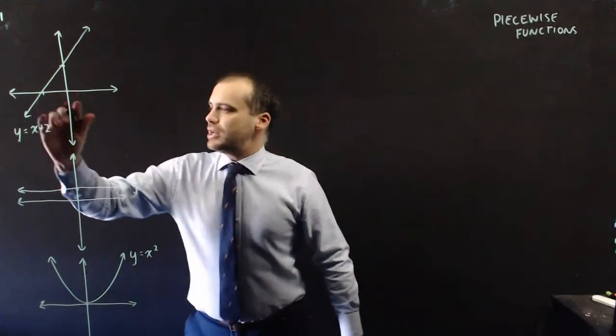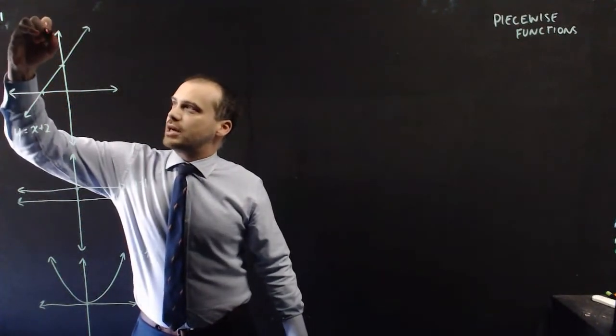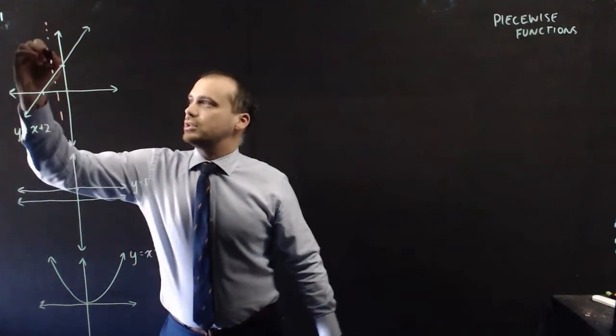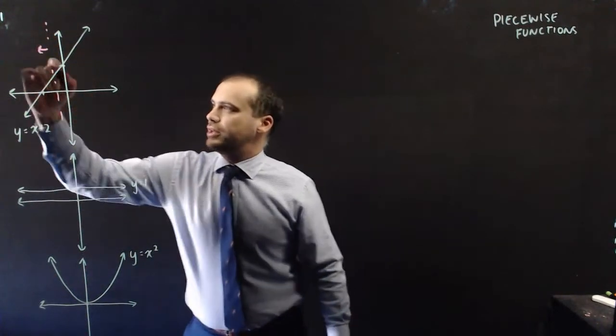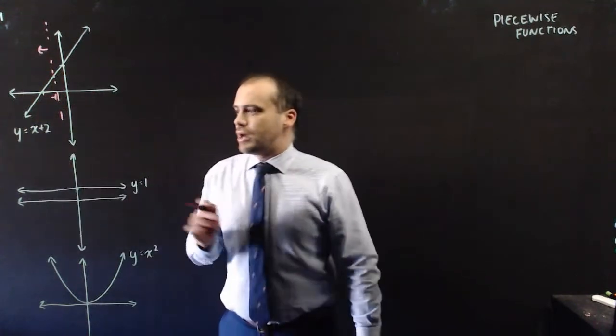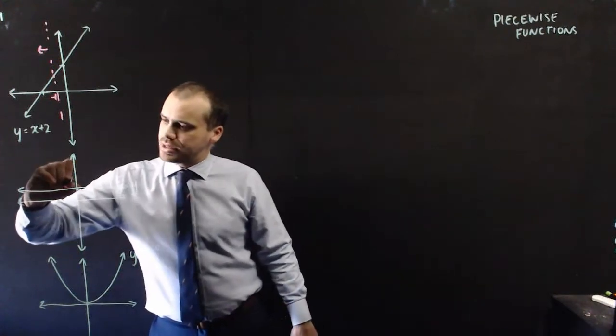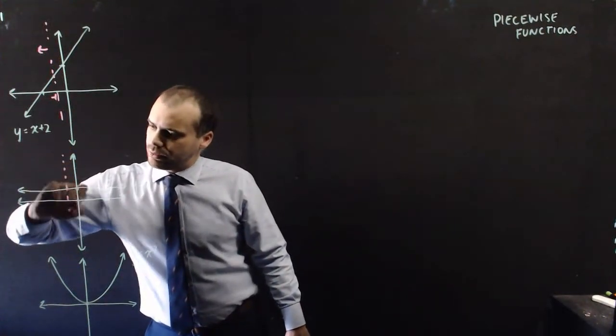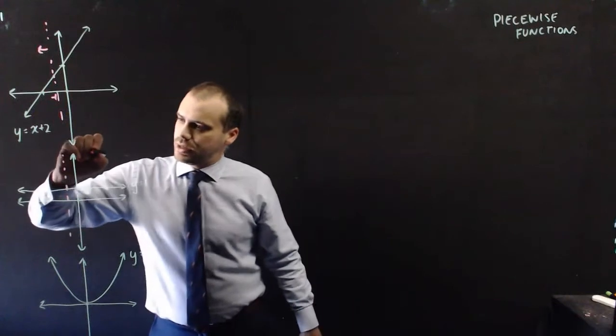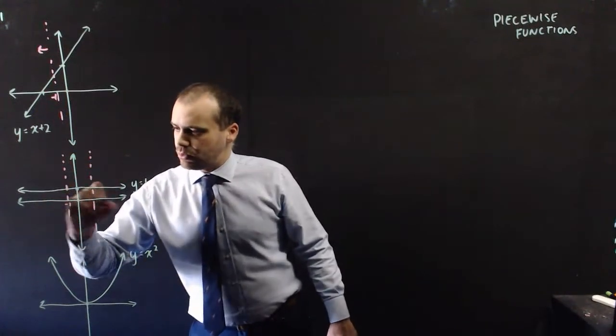So what I'm going to do is get a piece of y equals x plus 2. The piece that I'm going to get is everything to the left of that line. That line is negative 1. I'm going to take a piece of this graph. I'm going to choose the piece from where I left off here, negative 1, and to here 1.